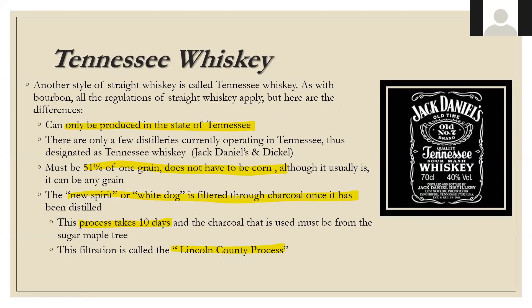Tennessee whiskey is one of the more unique styles — it can only be produced in the state of Tennessee. Jack Daniel's and Dickel are really the only distilleries; it must be 51% of one grain (typically corn), and then it has to be filtered through charcoal after distillation. This process typically takes about 10 days and is known as the Lincoln County Process. It's one of the more unique processes — if you're out of Jack Daniel's, you won't find something similar.